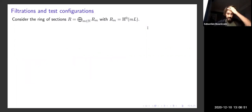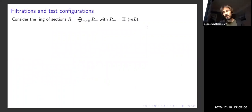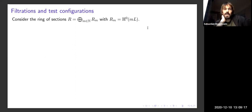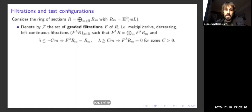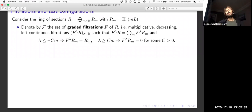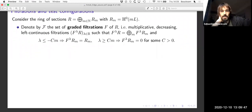Now let me move on to filtrations. Filtrations in this setting were hinted at as a possible generalization of test configurations — that goes back to David Wittneström originally, and was then emphasized more consistently and systematically by Gabor Székelyhidi. Here we denote by R the ring of sections of L; it's a graded ring whose graded pieces are sections of mL. We denote by script F the set of graded filtrations F on R, using notation that will hopefully be reasonably clear to follow.